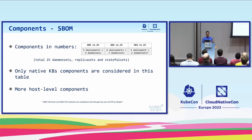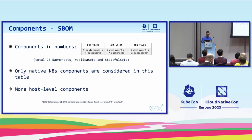In terms of numbers, if you stage a GKE, AKS, or EKS cluster V1.25, you will get by default 25 daemon sets, replica sets, or stateful sets — mostly in the kube-system namespace. And I'm only considering native Kubernetes components, because there are more host-level components as well.